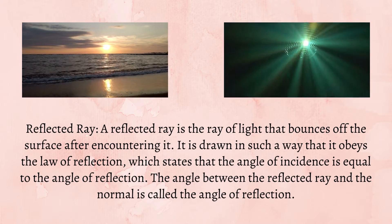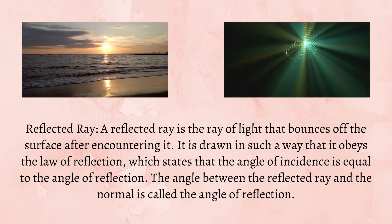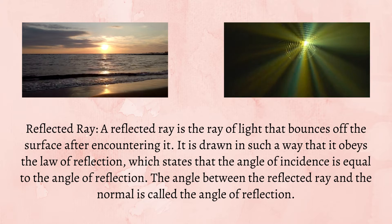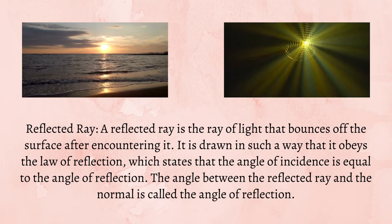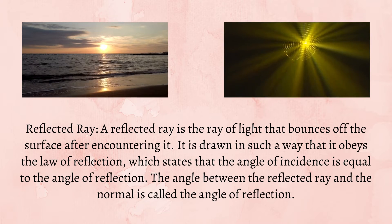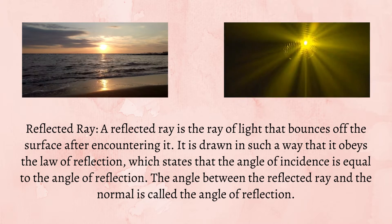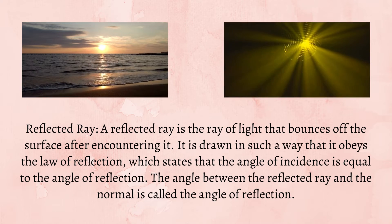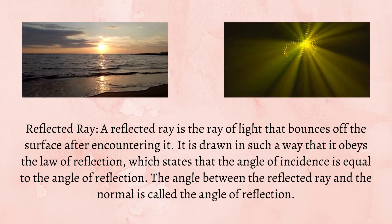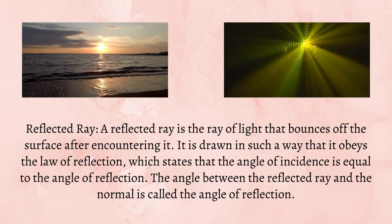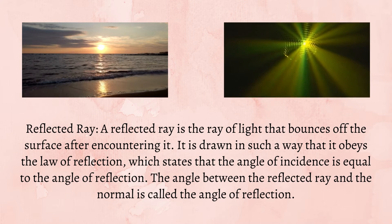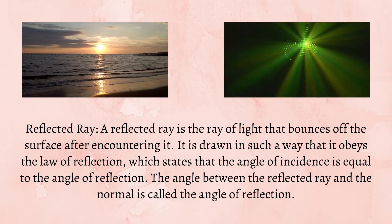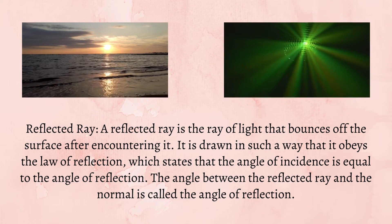A reflected ray is the ray of light that bounces off the surface after encountering it. It is drawn in such a way that it obeys the law of reflection, which states that the angle of incidence is equal to the angle of reflection. The angle between the reflected ray and the normal is called the angle of reflection.